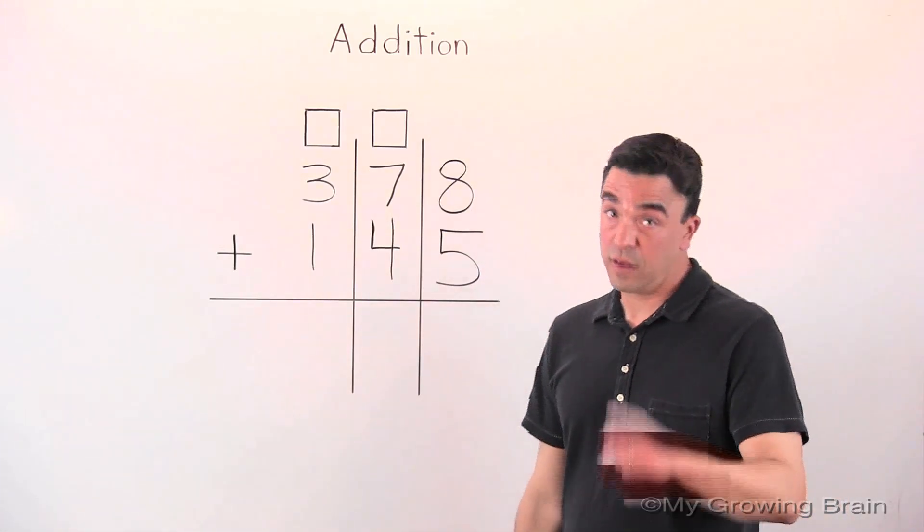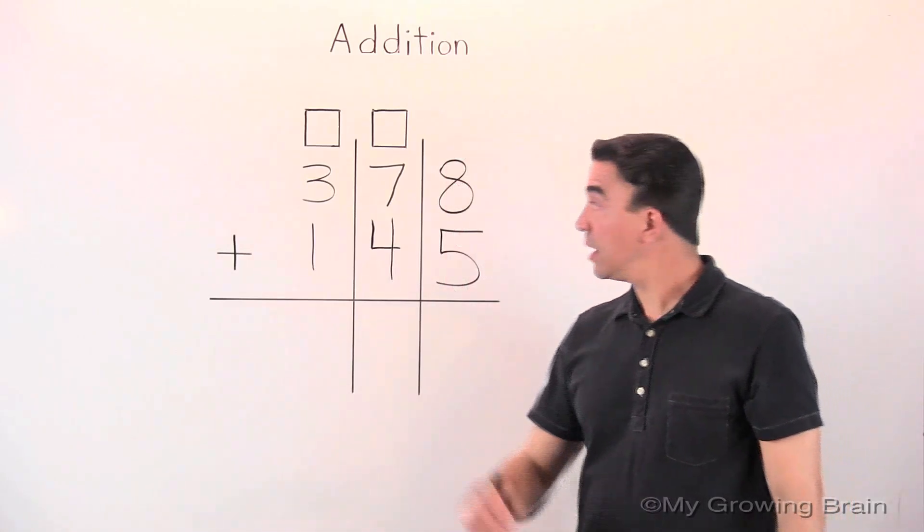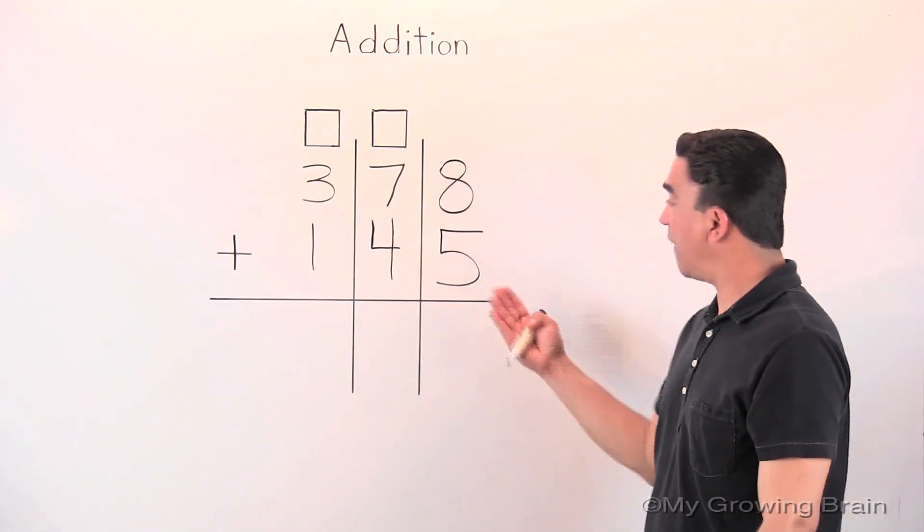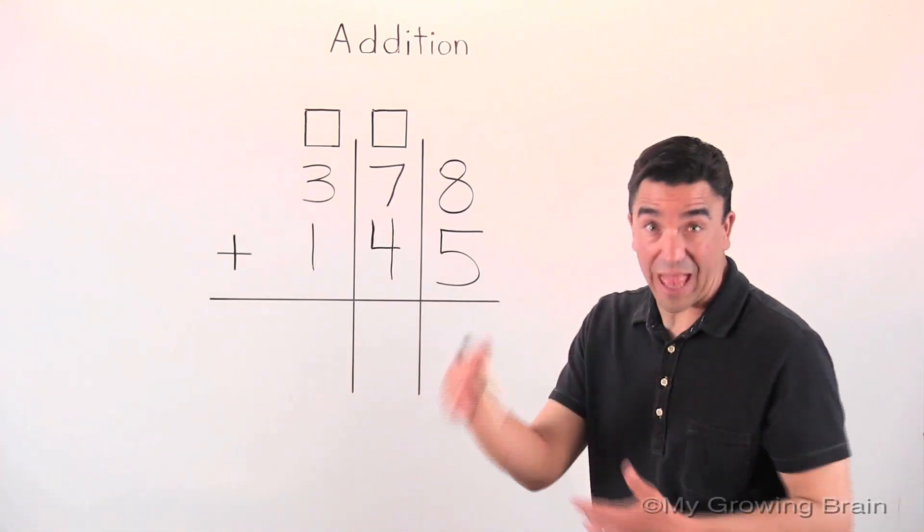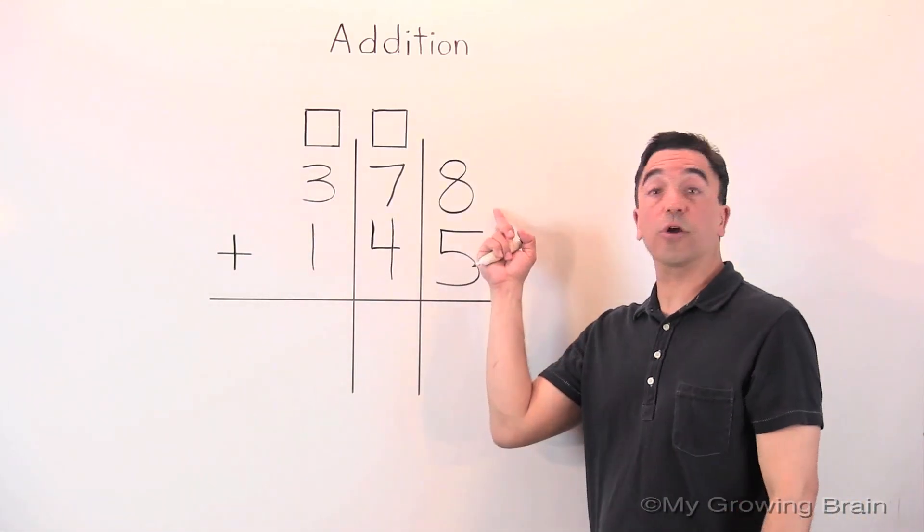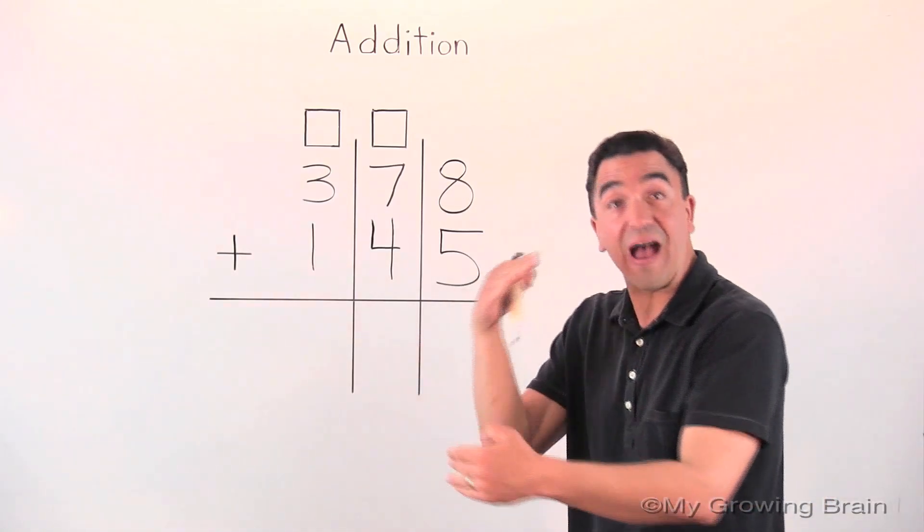Let's start in the ones place. Eight plus five. I like to use the counting-on strategy. I'm going to take the greater number, eight, put it in my head, and count on five.